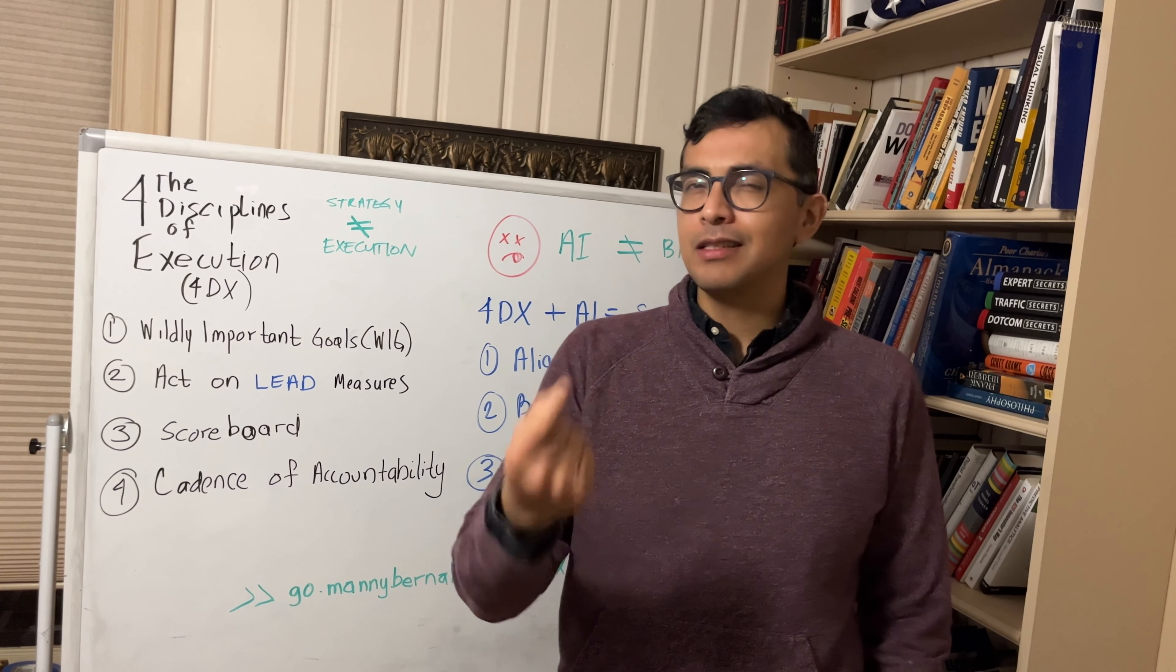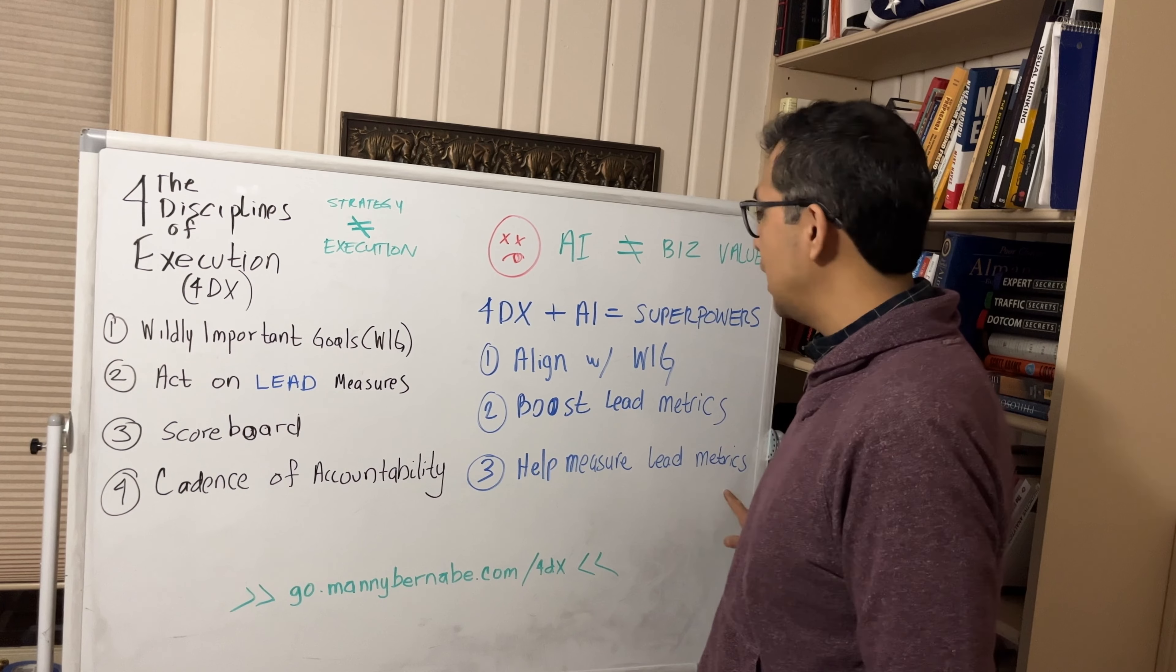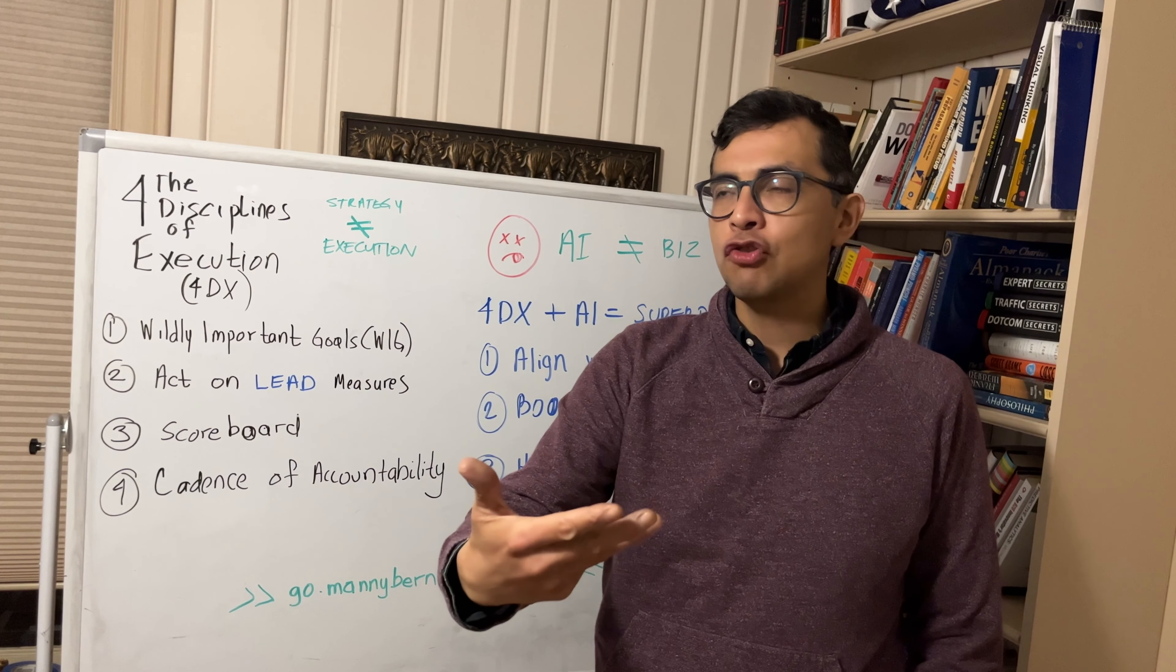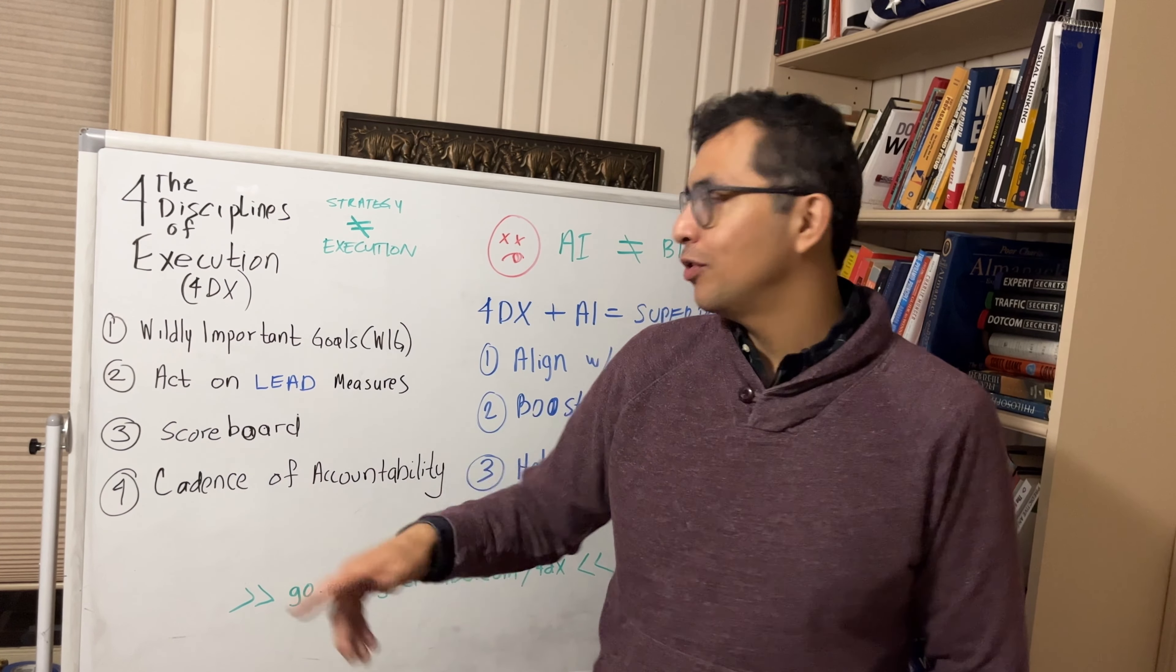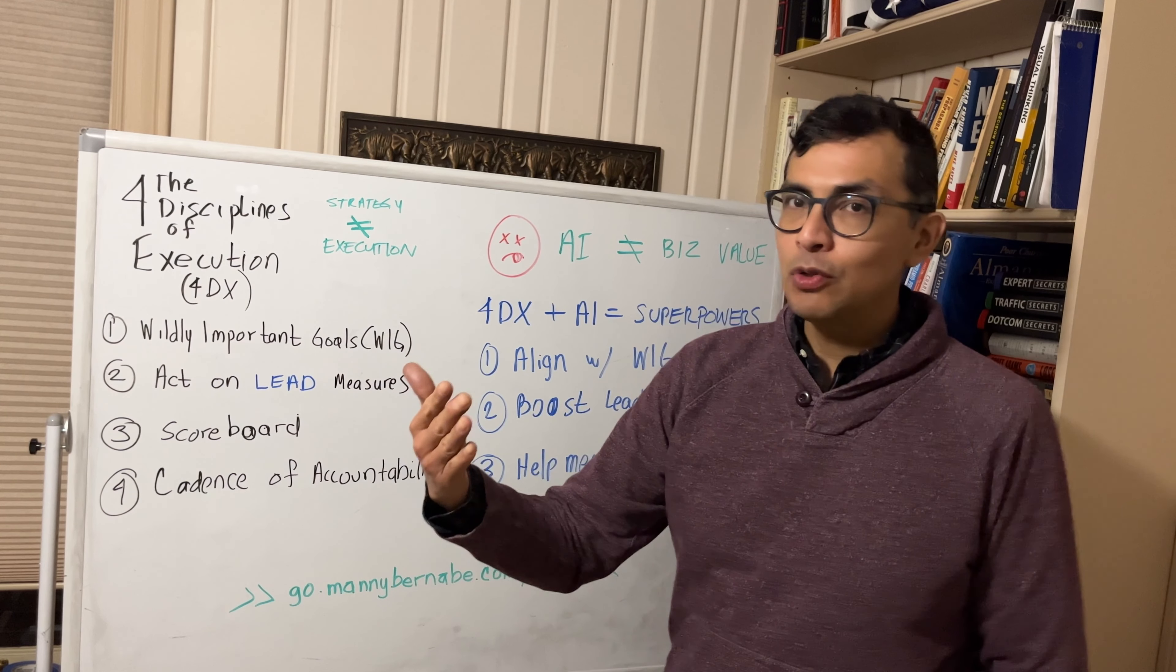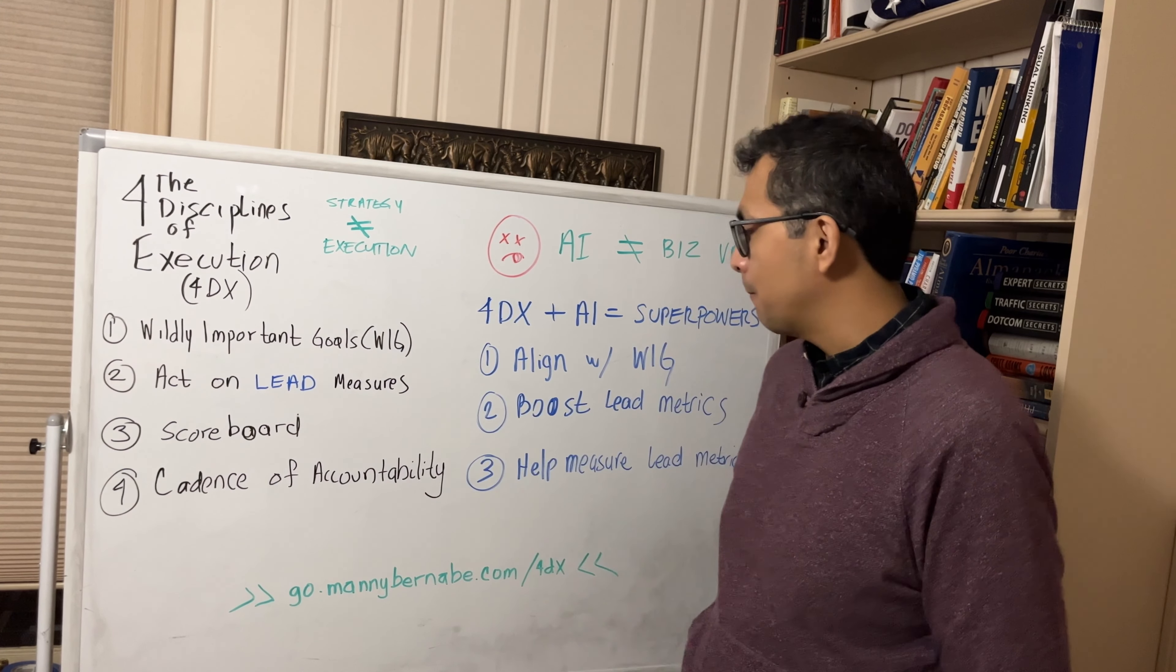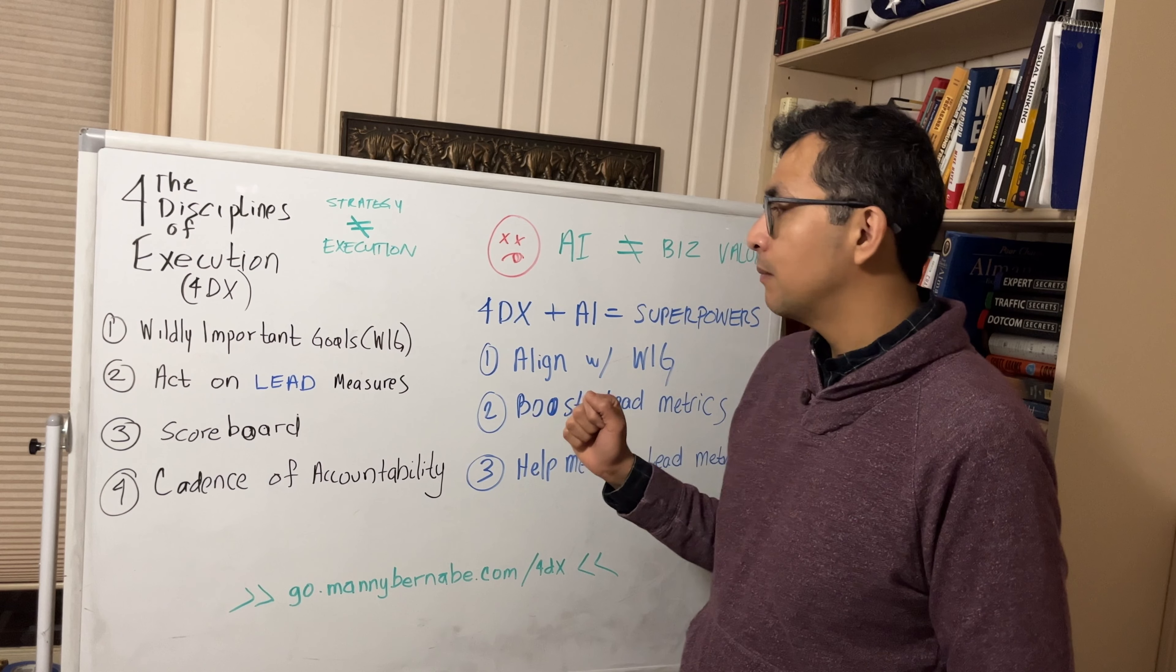And third on this list is a little bit more novel, but this idea of leveraging AI to measure lead metrics. There was an important point made in the book that lead metrics tend to be difficult to measure. Those are things that you're typically not already tracking. And so you oftentimes have to put in some sort of manual process to generate these lead metrics. And that can be tedious, that can add overall friction to the process. Well, those are great use cases for AI machine learning. AI machine learning can help make that a little bit more manageable and more automated in terms of measuring those lead metrics. So that's a third way in which we might leverage AI for 4DX and help these two concepts work together.